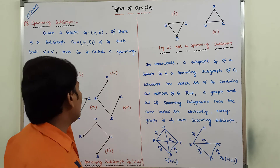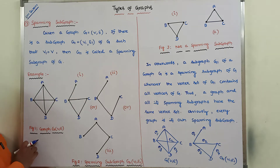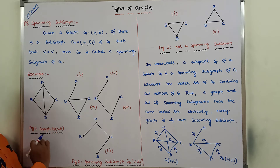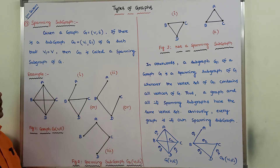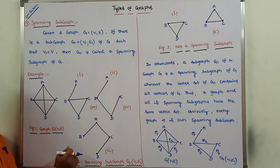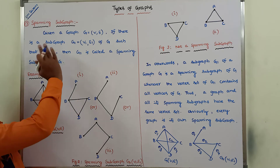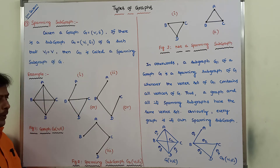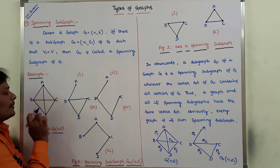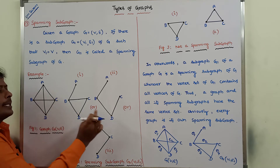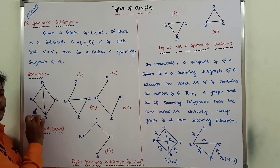So now we can go to this example. This is the given graph and these are the spanning subgraphs. We have to verify that. Once we understand these examples, then we can go for the definition. Here this is one spanning subgraph of this graph. This is one spanning subgraph. This is another spanning subgraph of this graph.